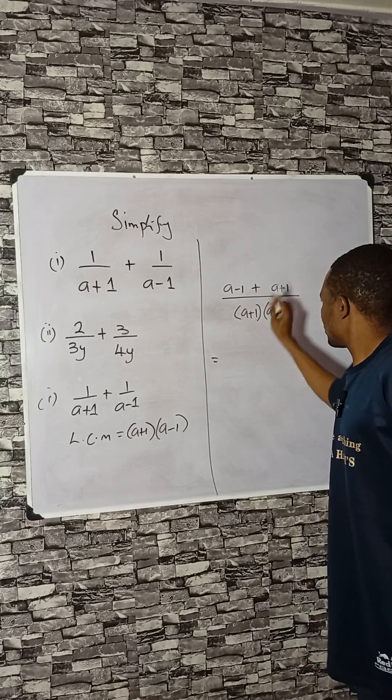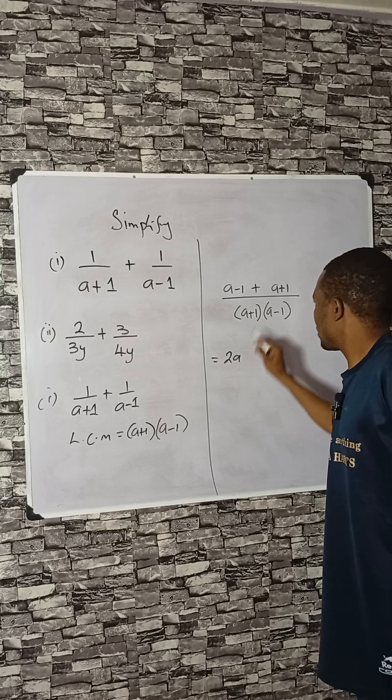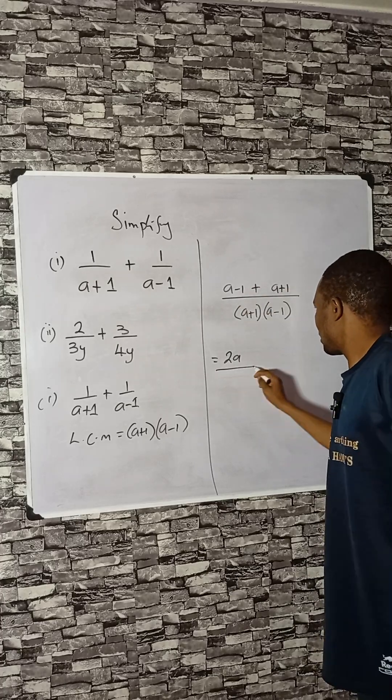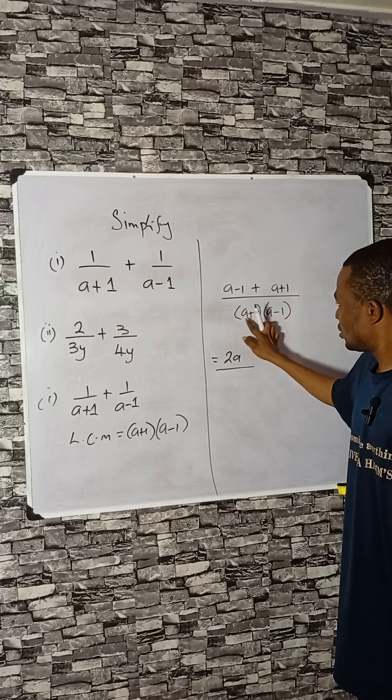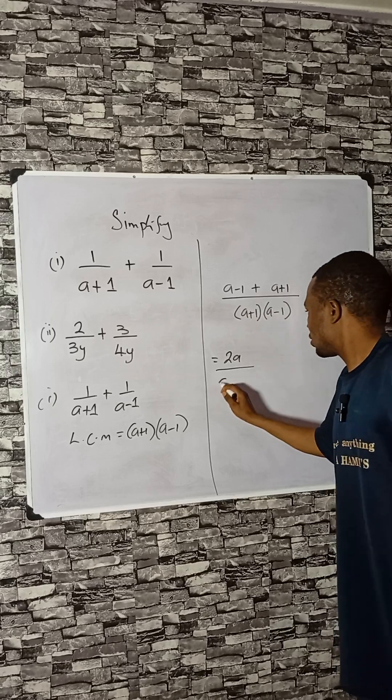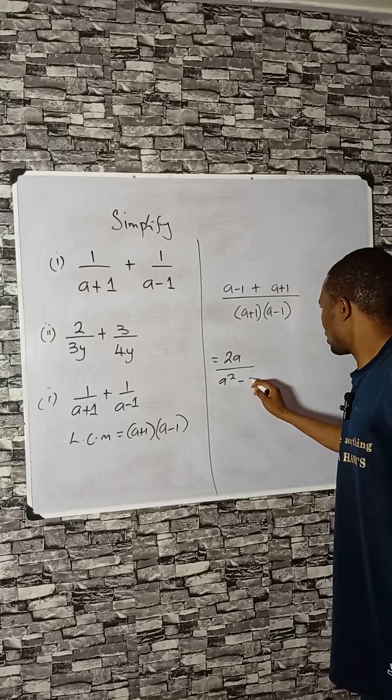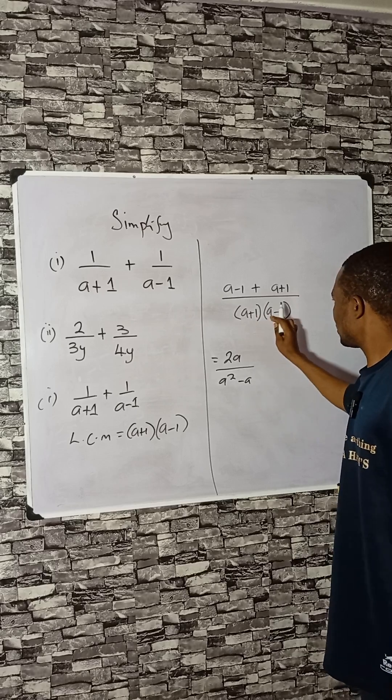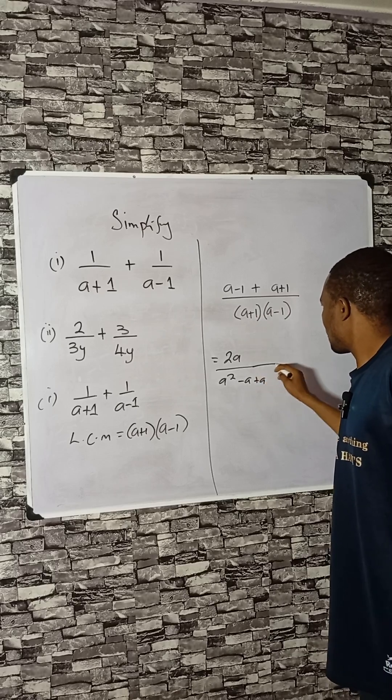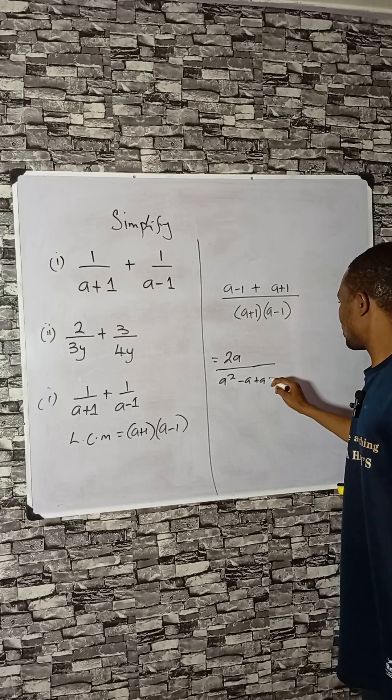a plus a is 2a, minus 1 plus 1 is zero, divided by this. Multiply this: a times a is a squared, a times this is minus a, this times this is plus a, then 1 times minus 1 is minus 1.